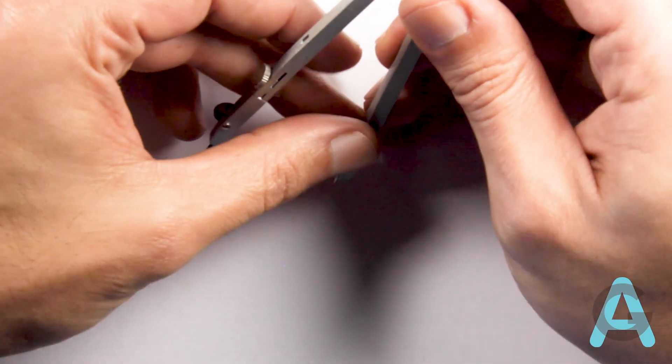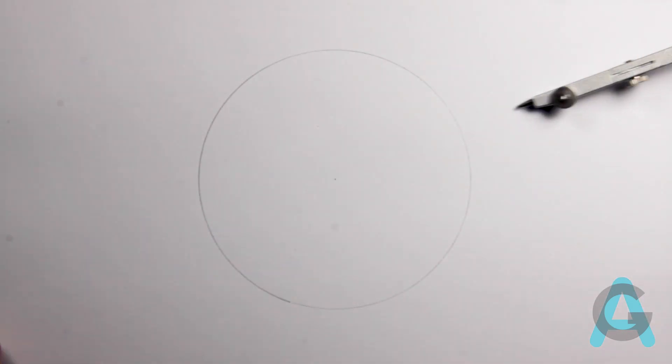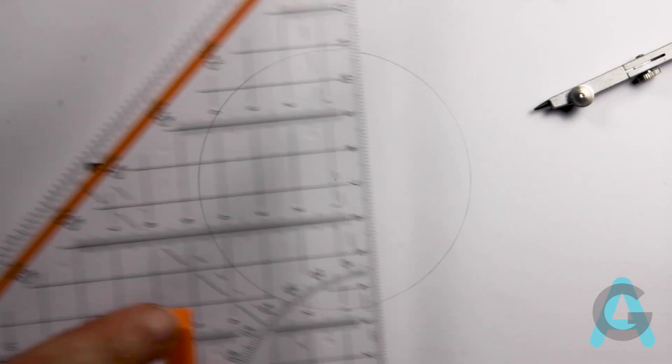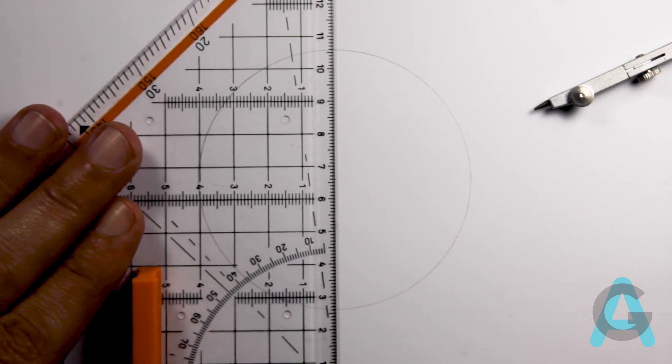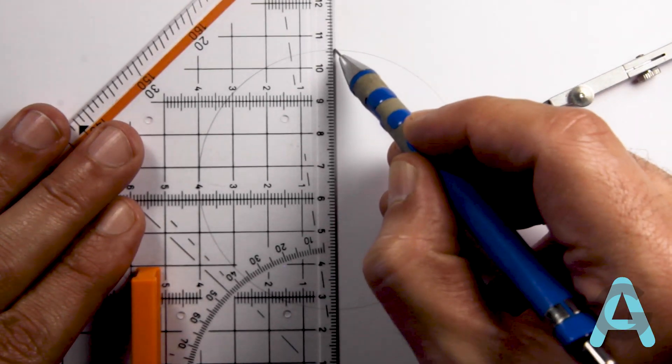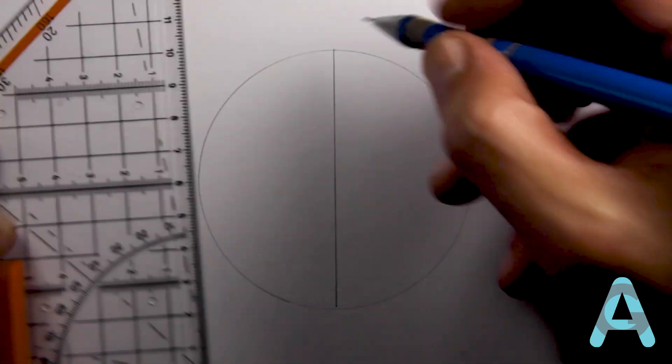We start to draw a circle and don't move the aperture of the compass. Next we trace a diameter of that circle, afterwards we give names to the two endpoints of the diameter.